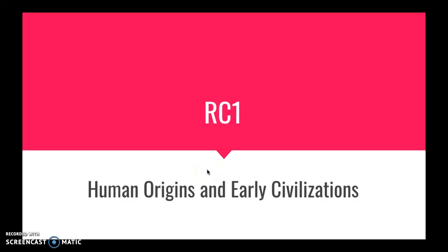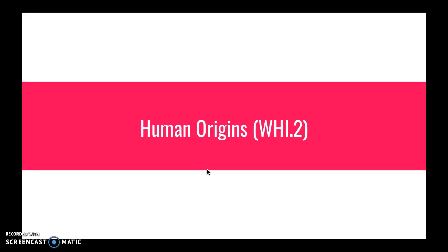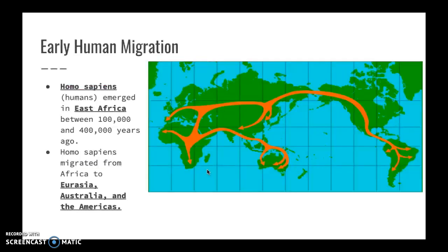This is the video to review for World History up until 1500. We're looking at the Virginia Standards of Learning, Category 1, which focuses on human origins and early civilizations. The first category we're going to talk about is human origins, which is looking at Standard 2.